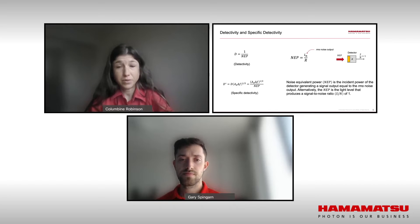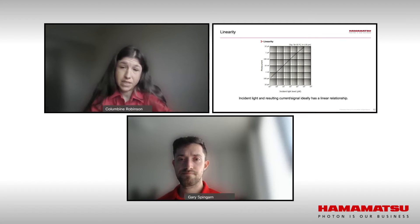NEP is the amount of signal required to achieve a signal-to-noise ratio of one. Ultimately you want as high of a signal-to-noise ratio as possible. D-star is the reciprocal of NEP, so the higher the value, the better. Now for linearity: when looking at the sensitivity of a detector, a certain amount of detected light power will yield a certain amount of signal. Ideally, the relationship between incident power and signal is linear so that no software correction is required and tools can be matched.